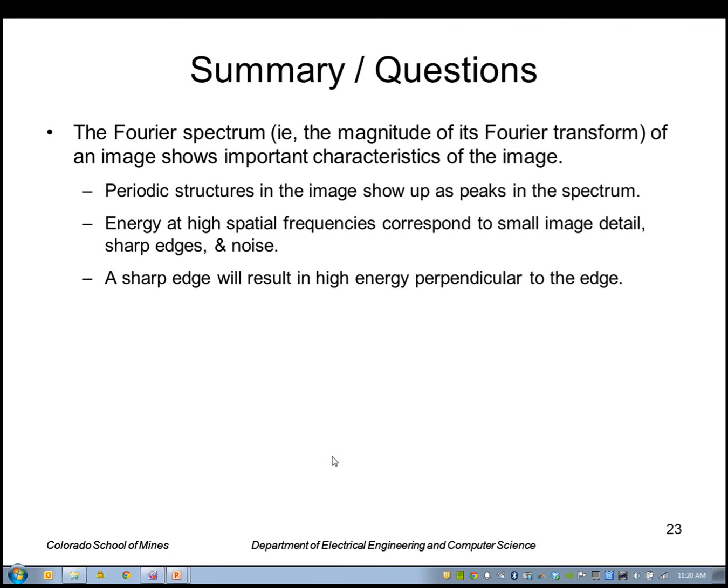In summary, the Fourier spectrum, namely the magnitude of the Fourier transform of an image, shows important characteristics of the image. Periodic structures in the image show up as peaks in the spectrum. Energy at high spatial frequencies corresponds to small image detail, sharp edges, and noise. And a sharp edge will result in high energy perpendicular to the edge.